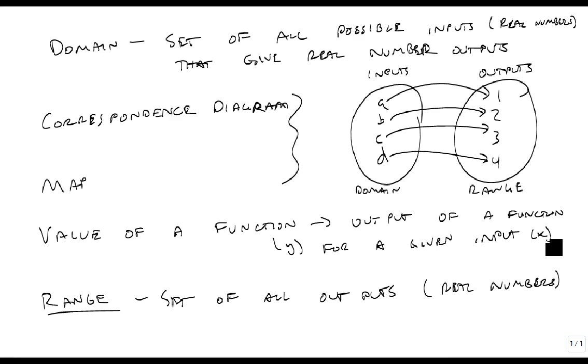Where the value of the function at b is two. Where the value of the function at d is four. So the value very specifically refers to the output. And so these are the terms and the information you need to know to be ready for this section.